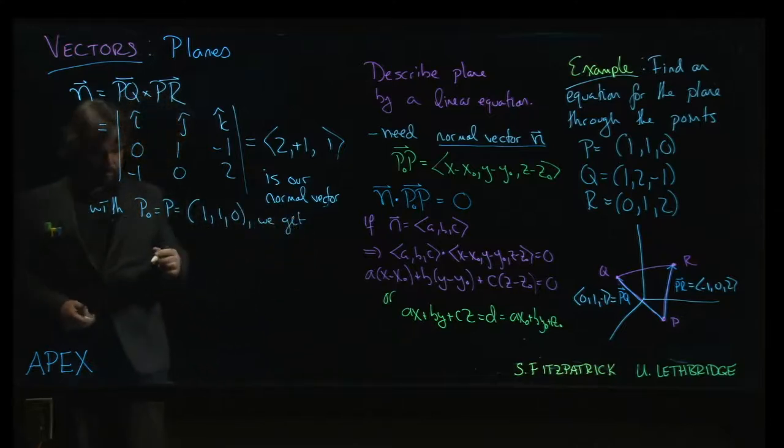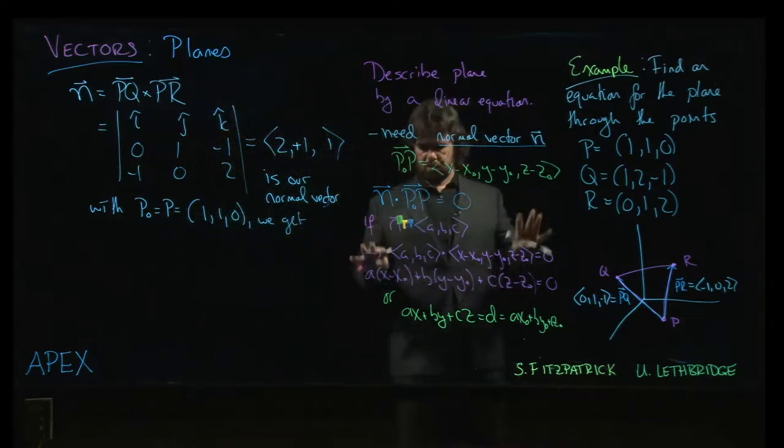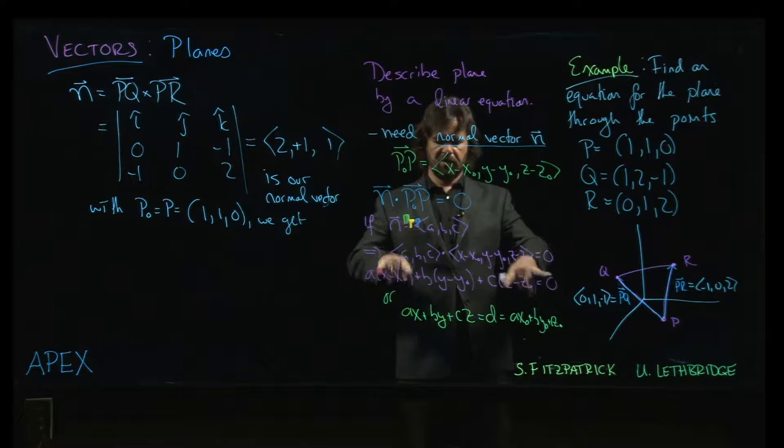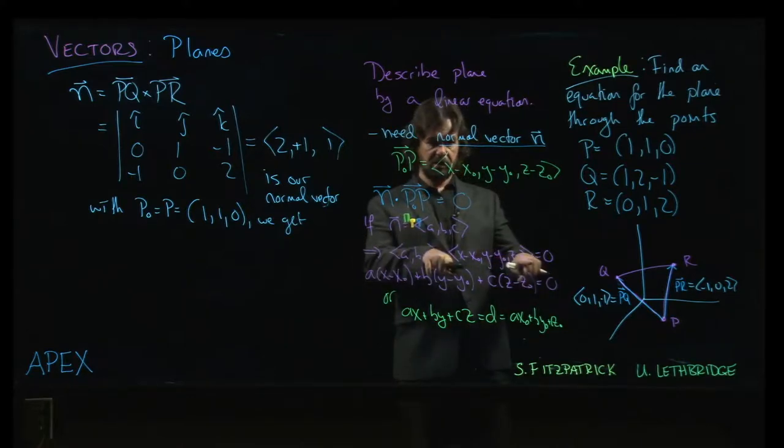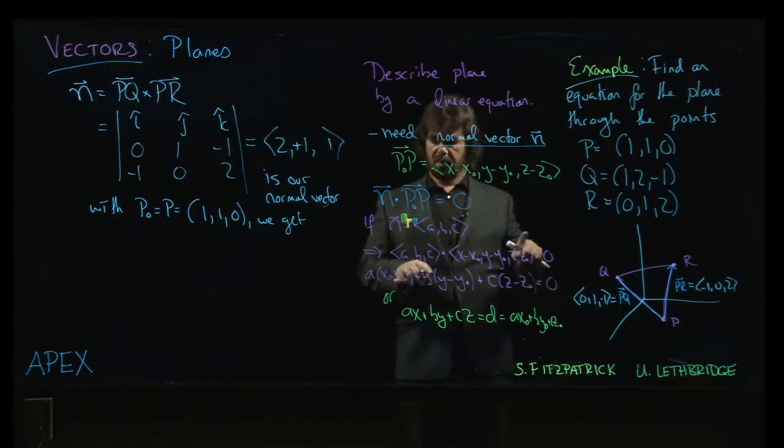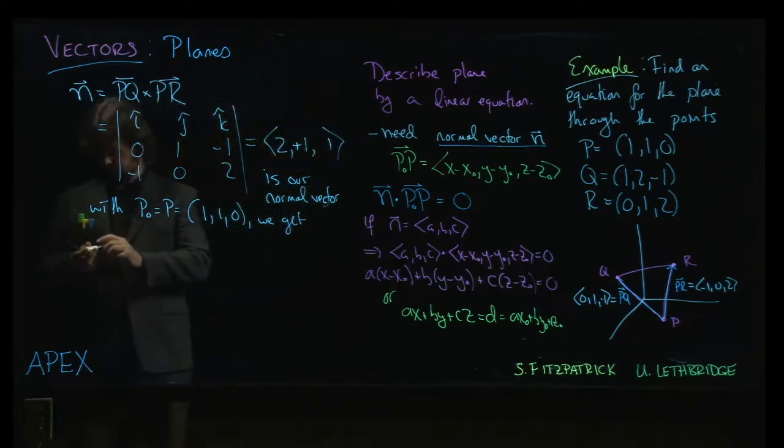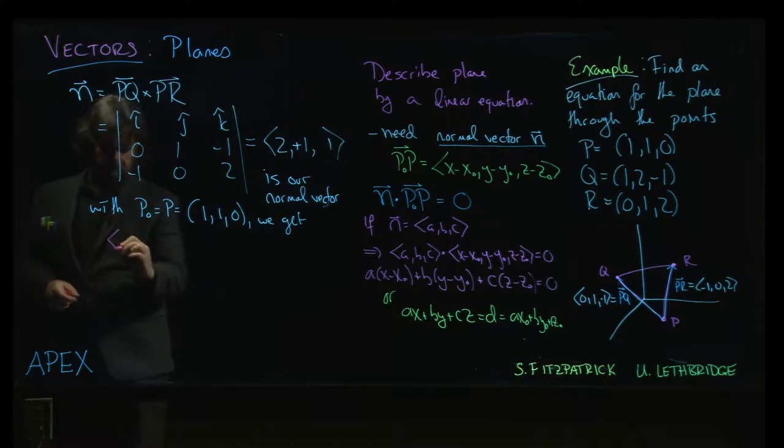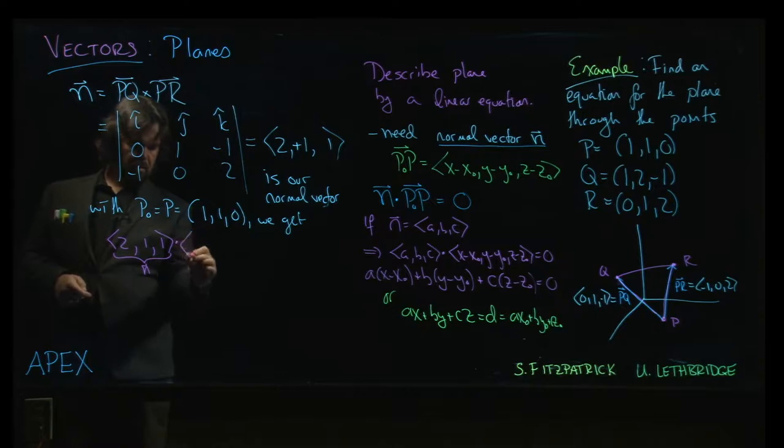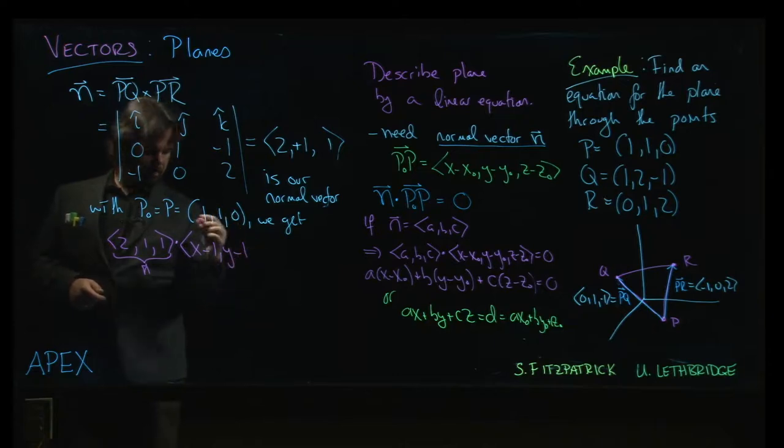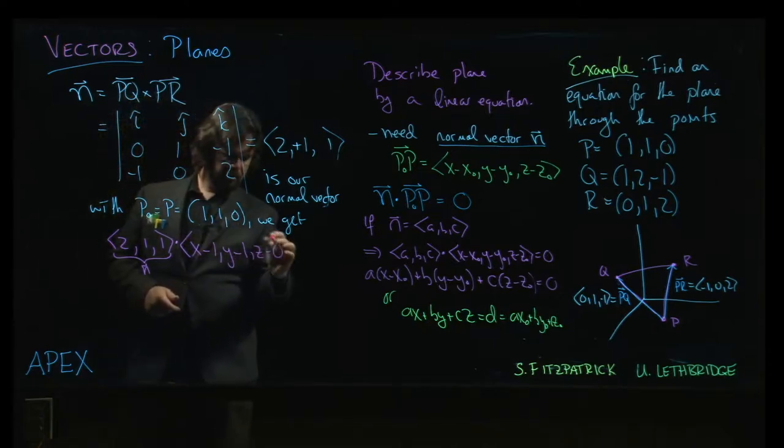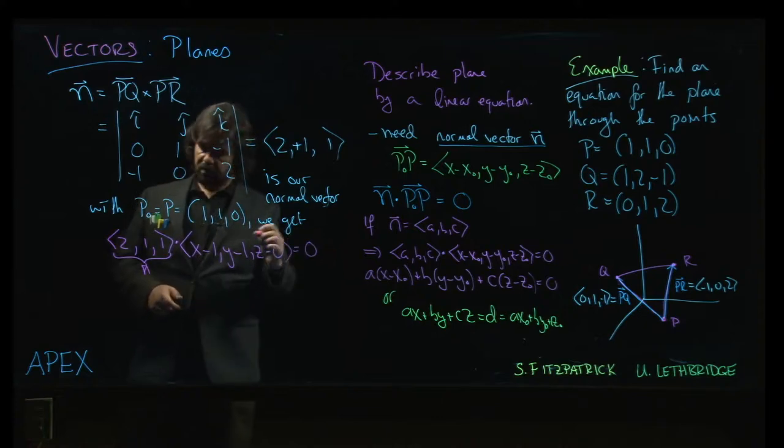And so what do we get? You can jump straight to here. Some people like to start with the vector equation. They find it easier to remember, and then they multiply out the dot product to get to the standard form. Let's do it that way. So first we write down the normal vector, two, one, one. There's N dotted with X minus one, Y minus one, Z minus zero equals zero.